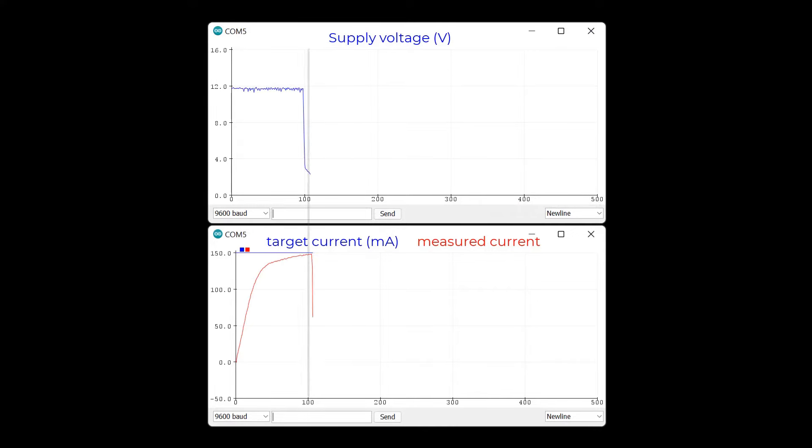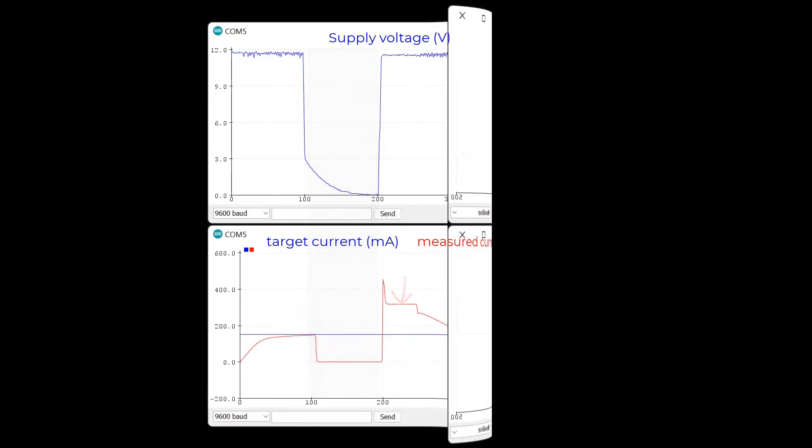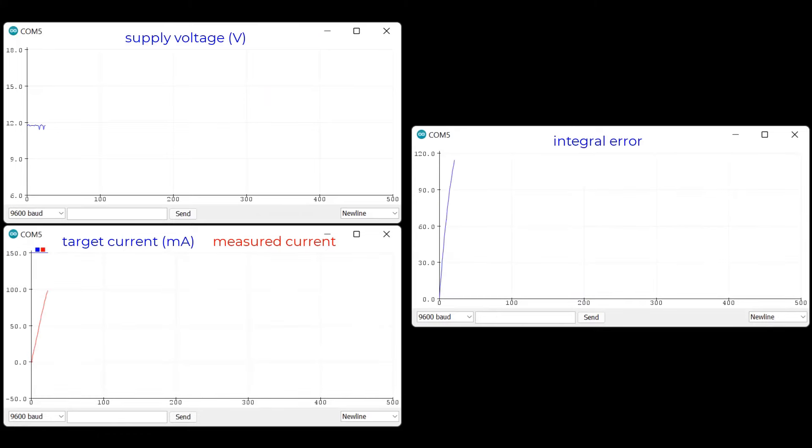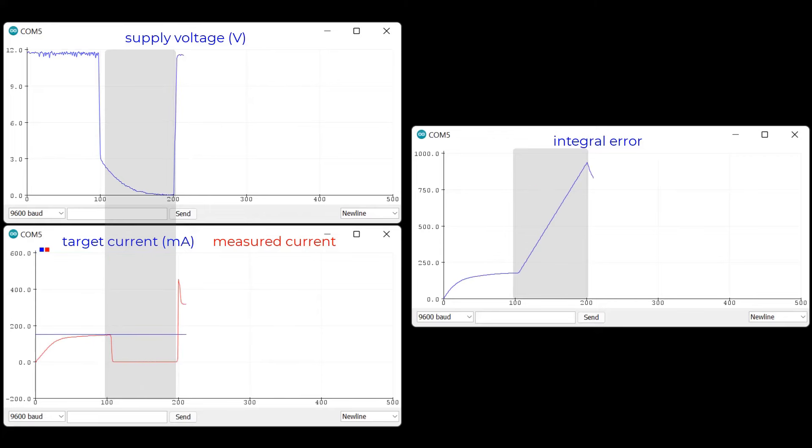If clouds cover the solar panel, the supply current will drop below the target. When the sun comes back out, the supply increases again. When it does, the integral controller vastly overshoots the target. Why? The problem is that the integral term accumulates error over time, so while the supply was low, a lot of error was accumulated. All that accumulated error has to be used up, meaning that the controller takes a long time to return to the right duty cycle. This error accumulation is known as windup.